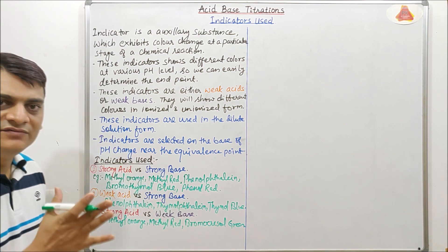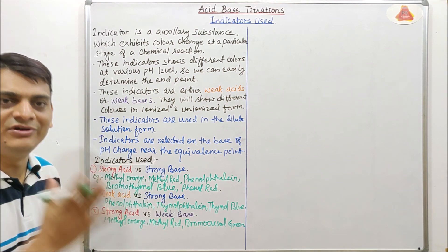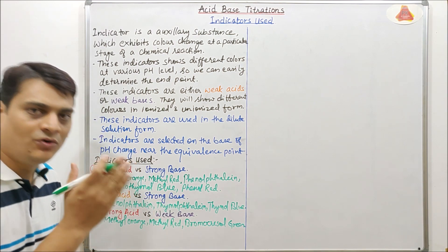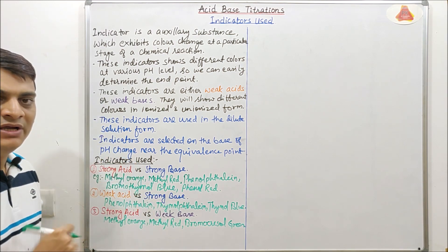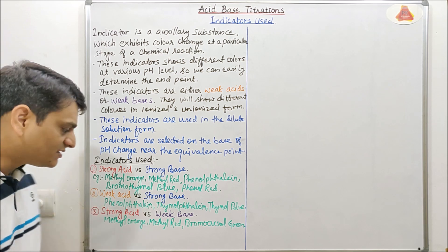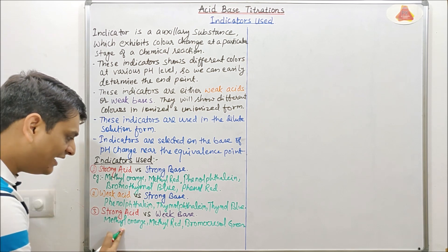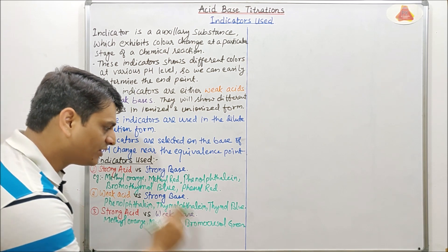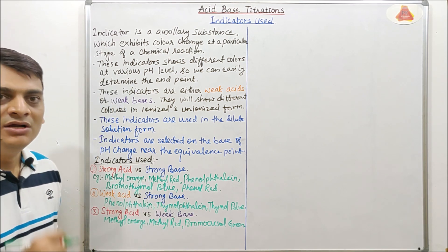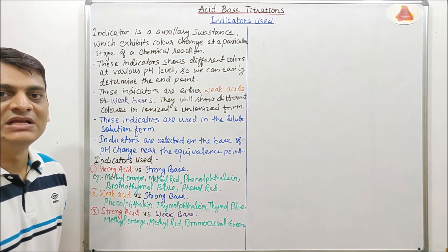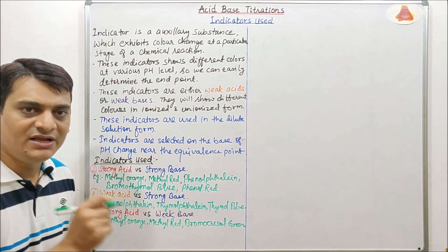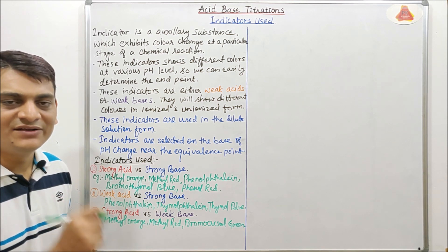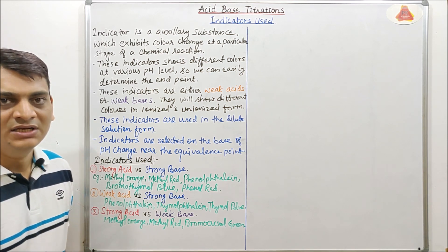In strong acid versus weak base titration, we will get the equivalence point below pH 7, and the indicators used are methyl orange, methyl red, and bromocresol green.